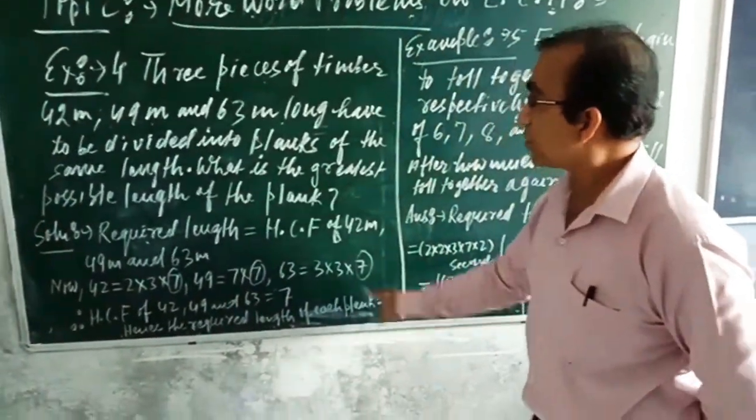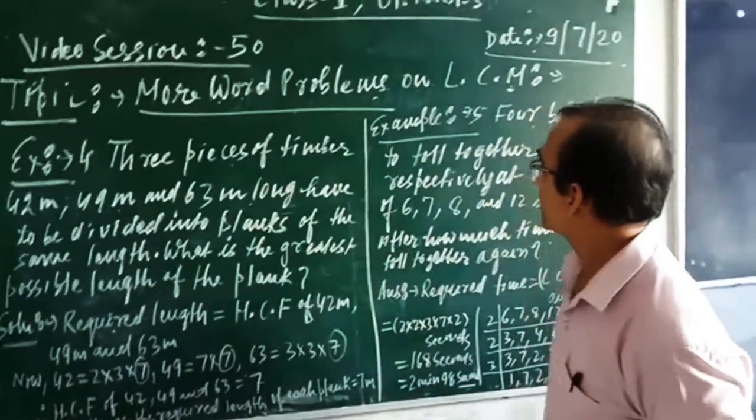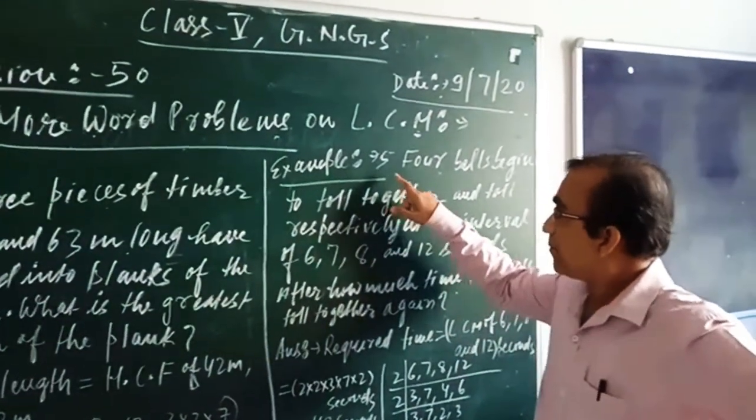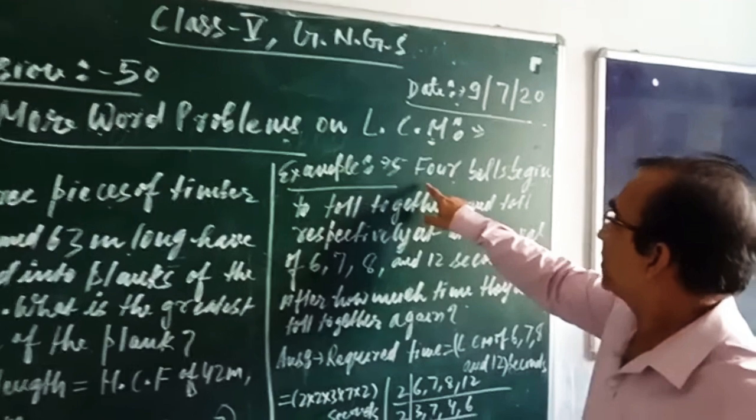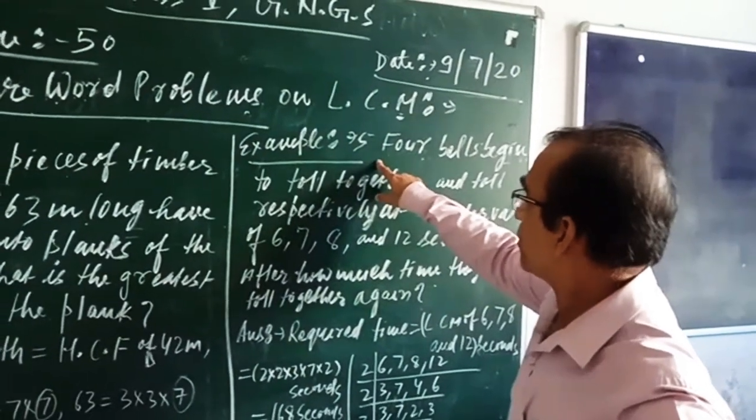So this is the required length which can measure all these three lengths. Now it comes to the next example. This question is example number 5 of your book.